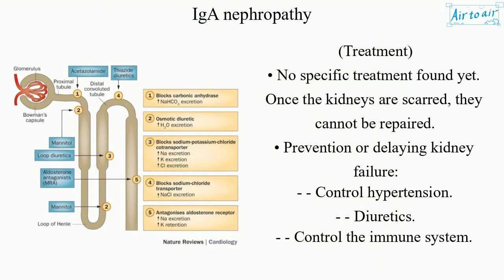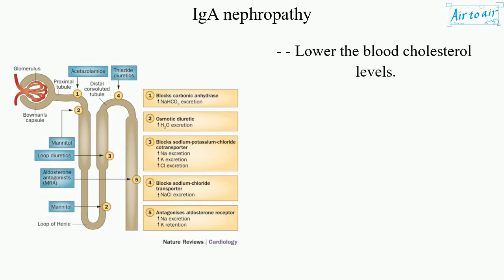Treatment. No specific treatment has been found yet. Once the kidneys are scarred, they cannot be repaired. Management focuses on prevention or delaying kidney failure: controlling hypertension, using diuretics, following the DASH diet, controlling the immune system, and lowering blood cholesterol levels.